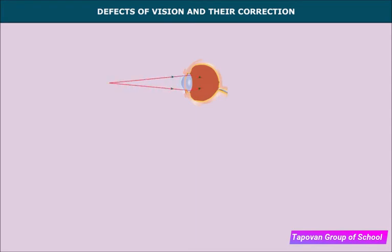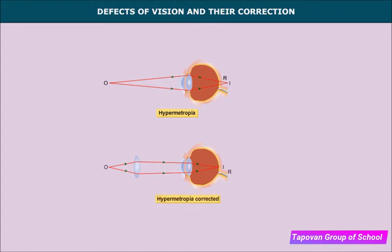In hypermetropia, a person can see far objects but cannot see near objects clearly, as the image is formed behind the retina. Causes include a focal length that is too long, an eyeball that is too small, or small curvature of the cornea. Correction: a convex or converging lens enables light rays from a near object to converge slightly before they fall on the eye lens, so that the image is formed on the retina.